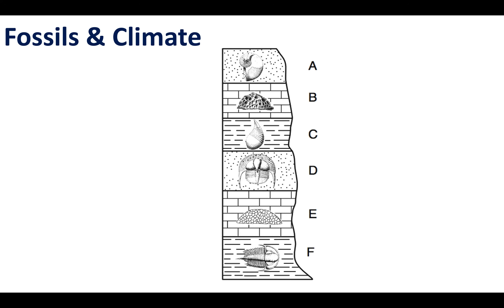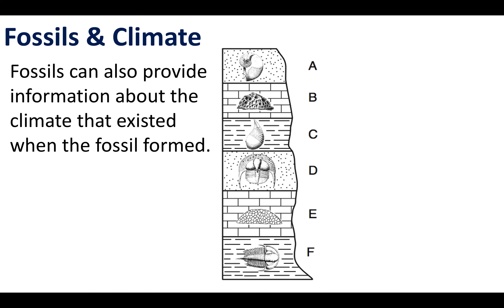Fossils can also provide interesting information about earth's climate. When a fossil is formed it's capturing an organism that existed at a certain time in the past. If a specific fossil contains an organism like a polar bear or a penguin — organisms that live in cold climates — then people will conclude that the environment those rocks formed in was cold. That tells us a lot about the climate of the past.